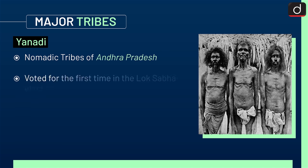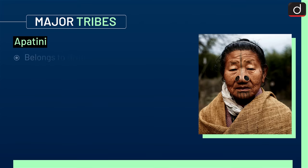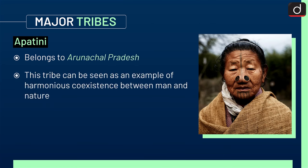The Yanadi tribe are nomadic tribes of Andhra Pradesh. They voted for the first time in the Lok Sabha election 2019. Next is the Apatini tribe, which belongs to Arunachal Pradesh. This tribe can be seen as an example of harmonious coexistence between man and nature.